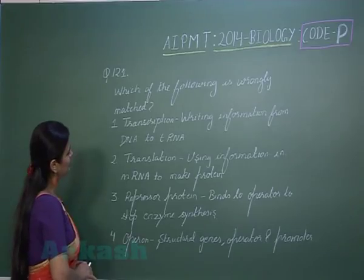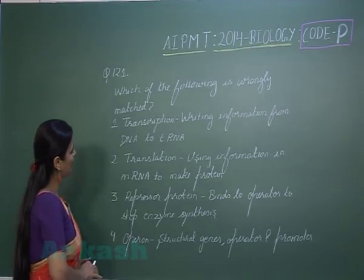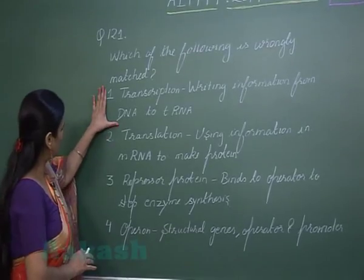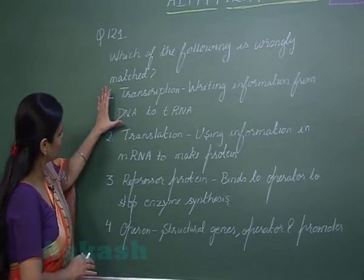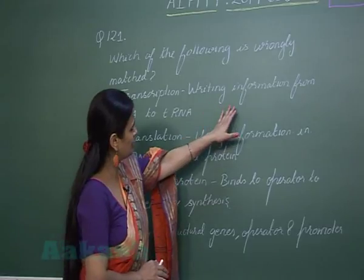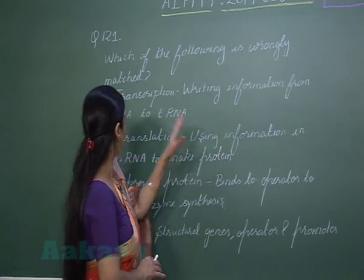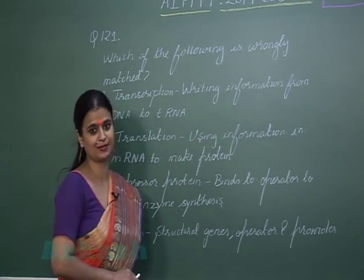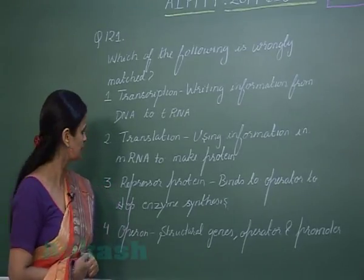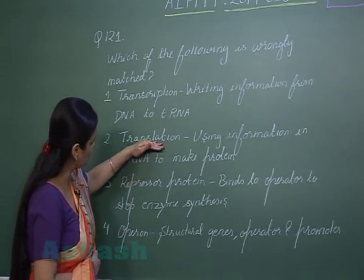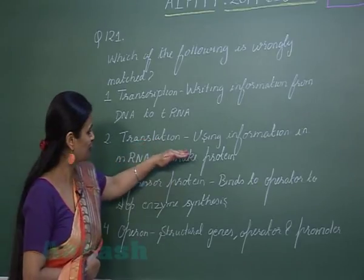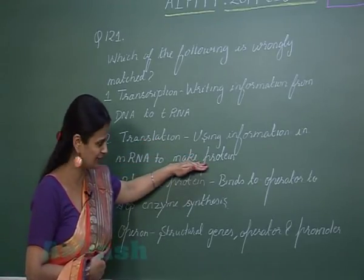In question 121 we have to look for an option which is incorrect. The first option states that transcription involves writing information from DNA to RNA — that is correct, it involves RNA synthesis. Translation is involved in the formation of protein, so that is also correct.